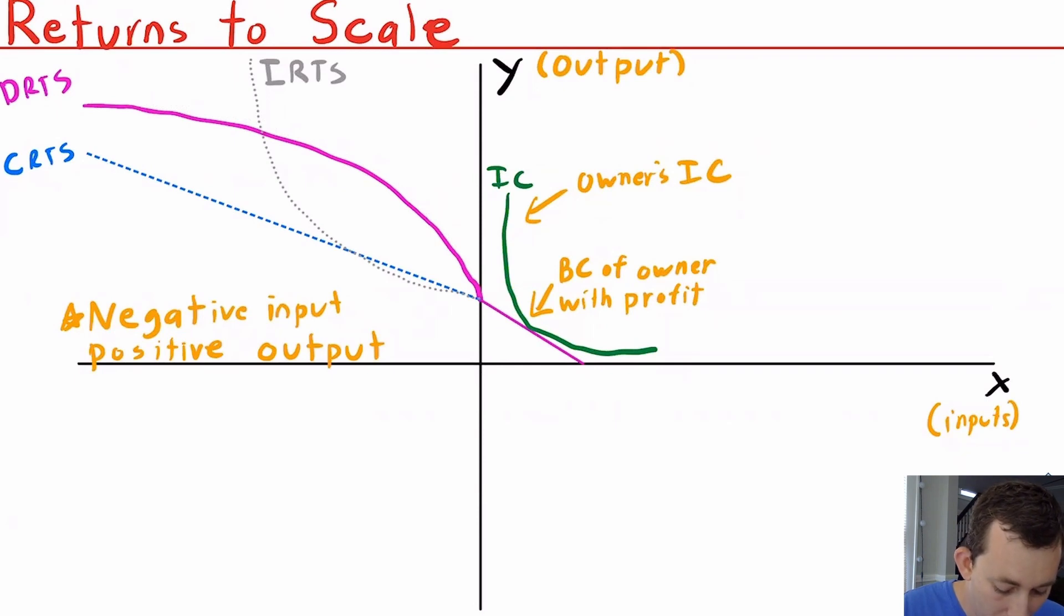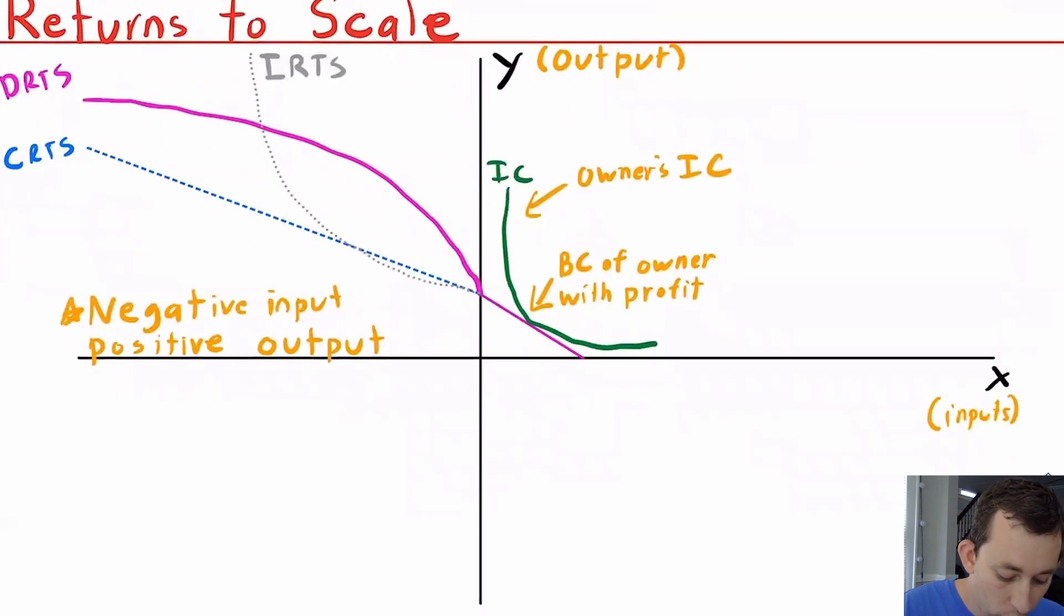Notice that we're going into the second quadrant, because if we want to make more output, we need to use up or expend more inputs. And if we're expending more inputs, we have more negative inputs. So negative inputs mean we're using them, positive output means we're getting some output out. So inputs go in, they're negative; outputs come out, they're positive. We have this whole thing going on in quadrant two.